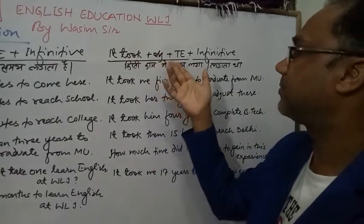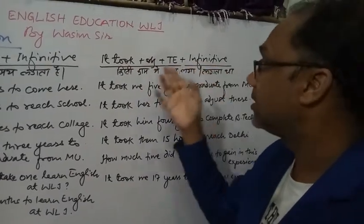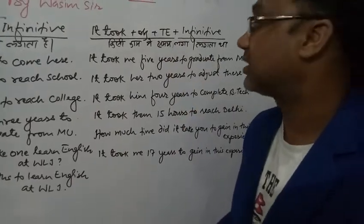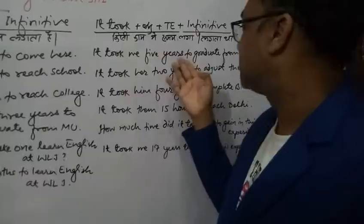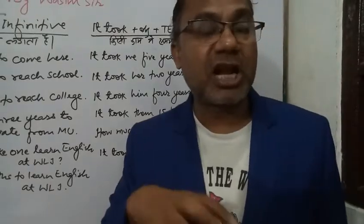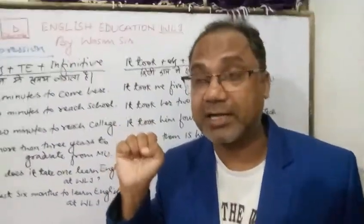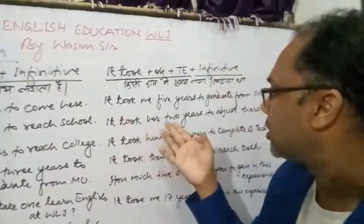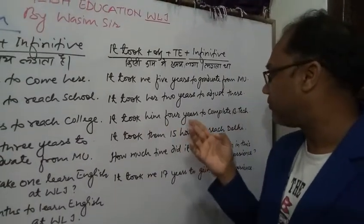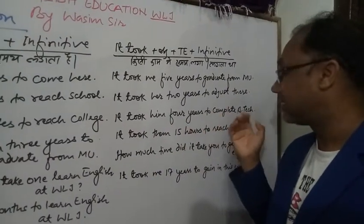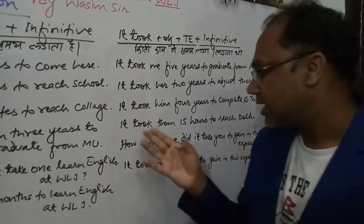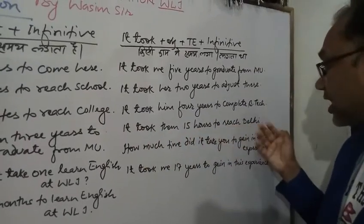Now the past tense structure: it took + object + time + infinitive. For example: It took me five years to graduate from AMU. It took him four years to complete B.Tech. It took them 15 hours to reach Delhi.